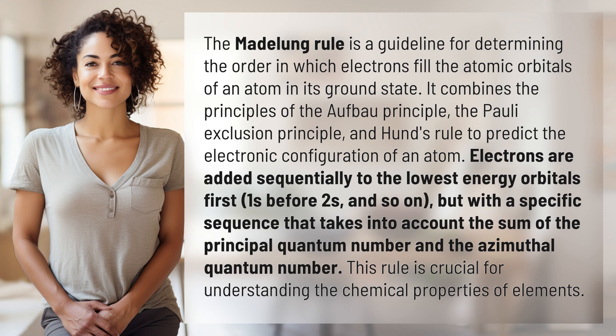Electrons are added sequentially to the lowest energy orbitals first — ones before twos, and so on — but with a specific sequence that takes into account the sum of the Principal Quantum Number and the Azimuthal Quantum Number. This rule is crucial for understanding the chemical properties of elements.